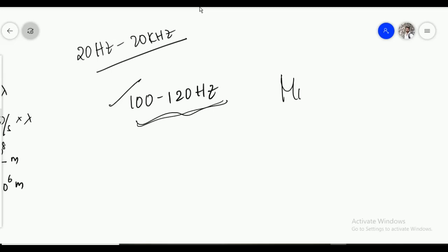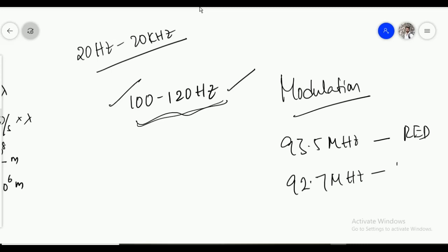That's where the modulation comes. The song frequency will be taken up, will be multiplied. I can say it is up to the 93.5 MHz if it is Red FM. And the same song will be up to the 92.7 MHz if it is Big FM.